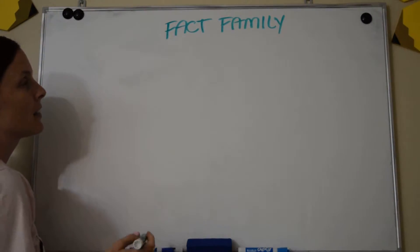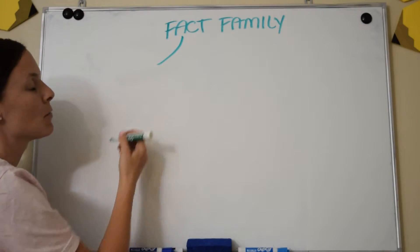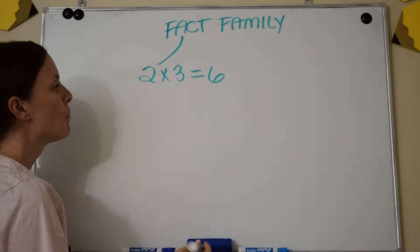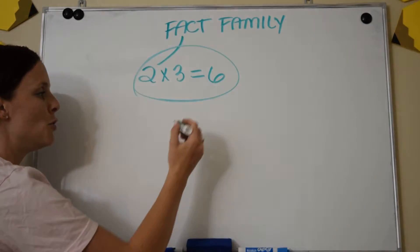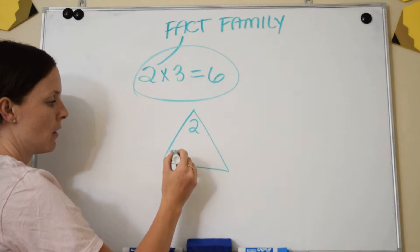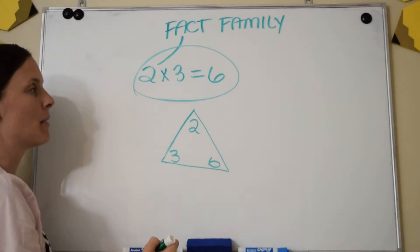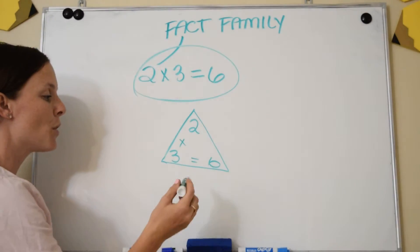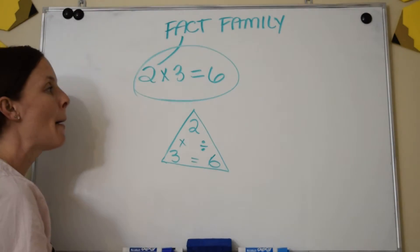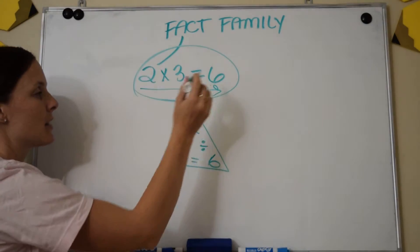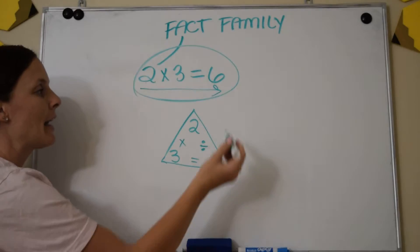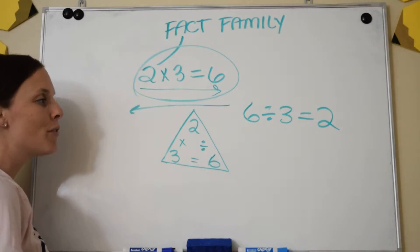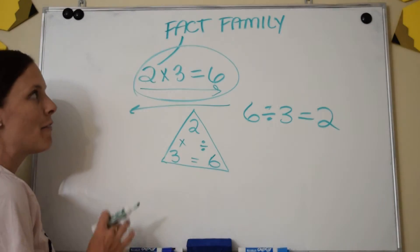So, fact families — let's think about that. We know our math facts; a fact is a multiplication equation. Let's start with something simple: 2 times 3 equals 6. We call these three numbers a family, and you might see it set up like a triangle. We know that 2 times 3 equals 6, but you can also relate all of these numbers using division — it's like going backwards. If 2 times 3 gives me 6, I can go backwards and say 6 divided by 3 gives me 2.